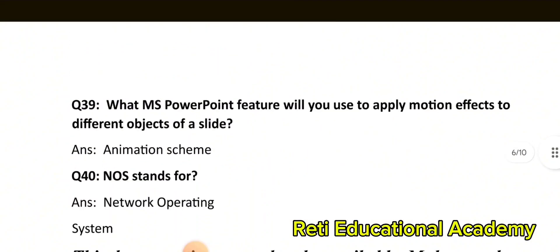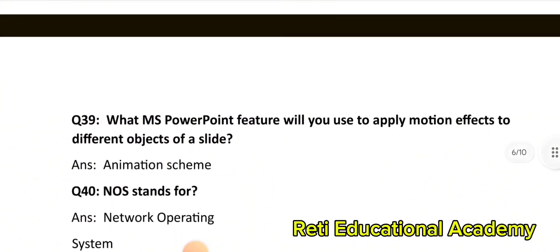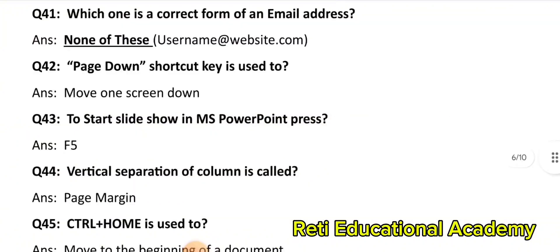Question number 39: What MS PowerPoint feature will you use to apply motion effects to different objects of a slide? The correct answer is: Animation Scheme. Question number 41: Which one is the correct form of an email address? The correct answer is: None of these — username@website.com. Question number 42: Page Down shortcut key is used to move one screen down.